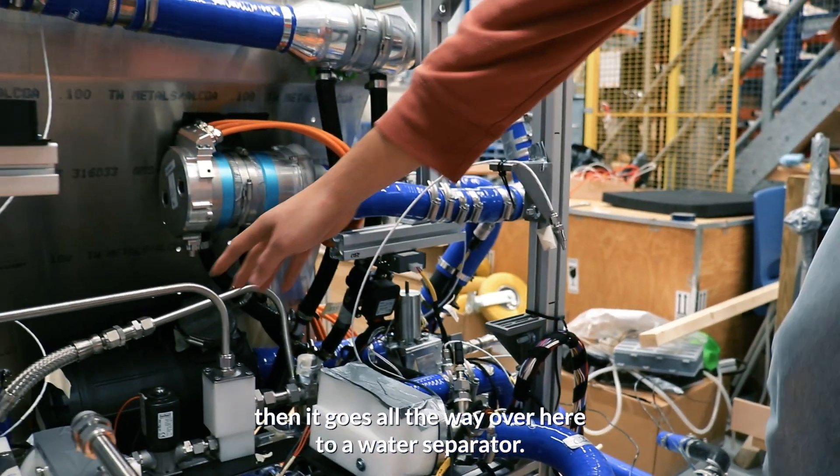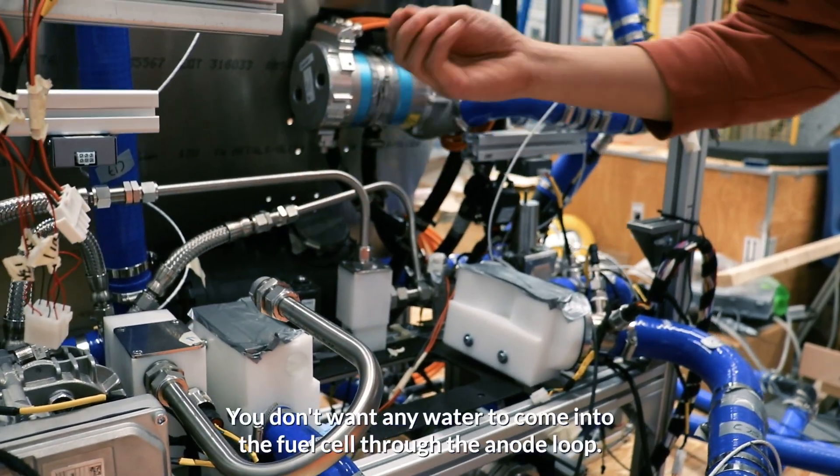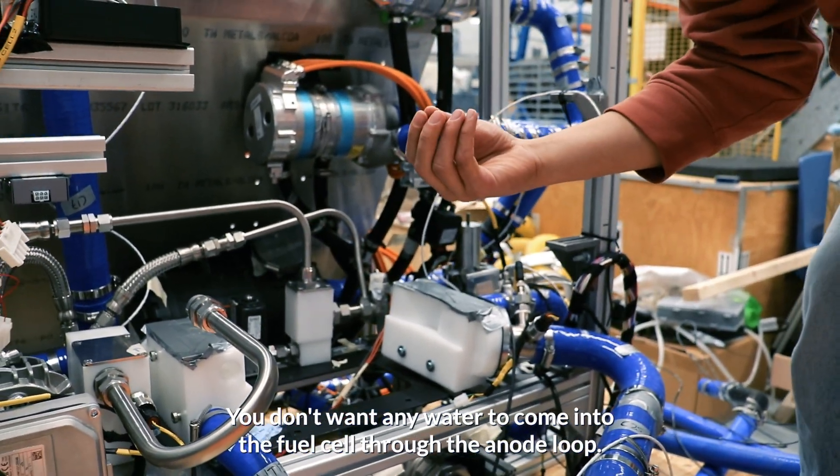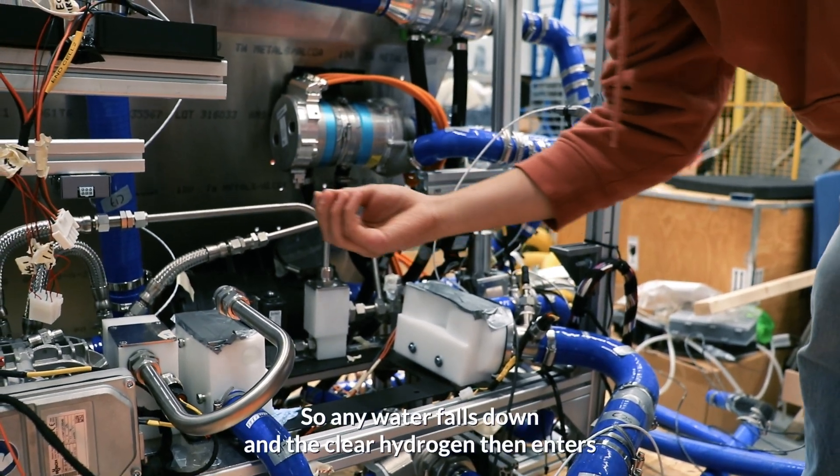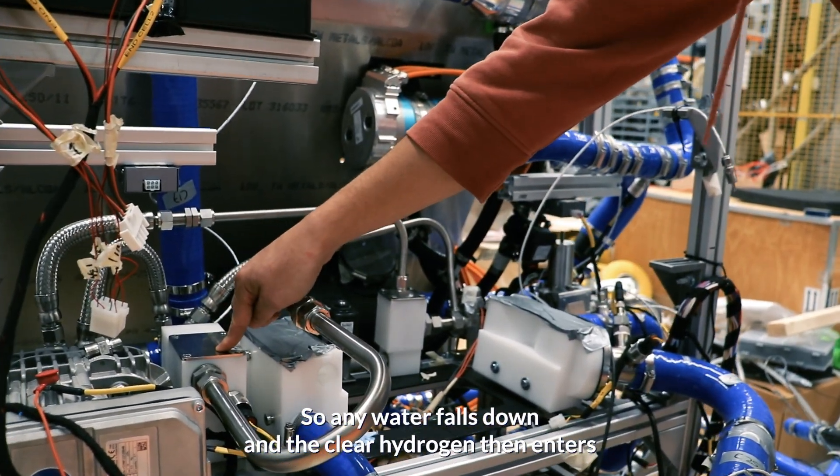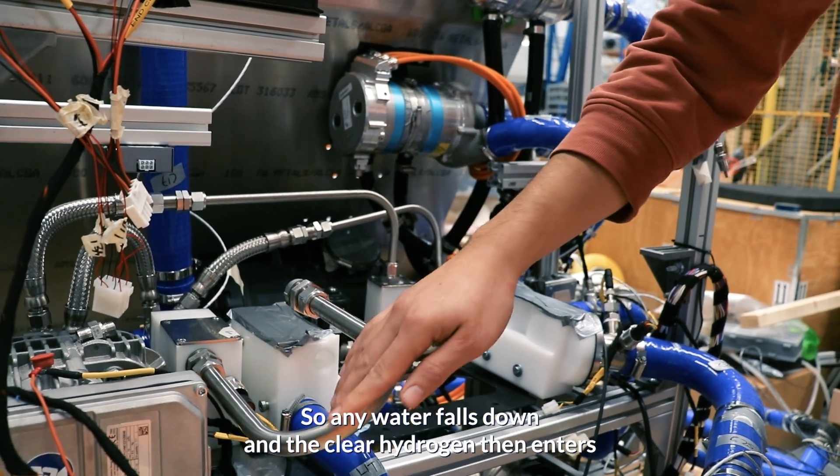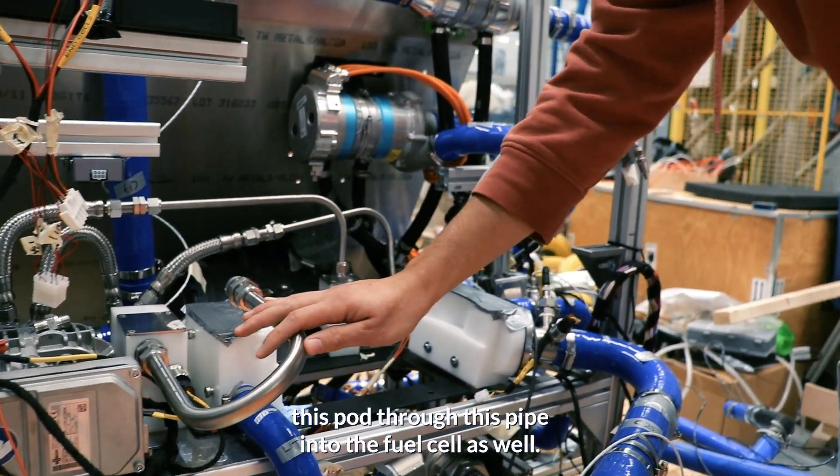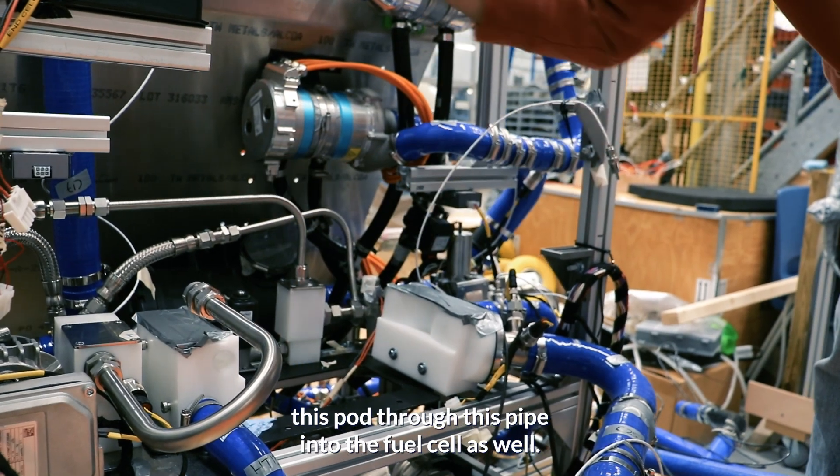Then it goes all the way over here to a water separator. You don't want any water to come into the fuel cell through the anode loop, so any water falls down and the clear hydrogen then enters this pod through this pipe into the fuel cell as well.